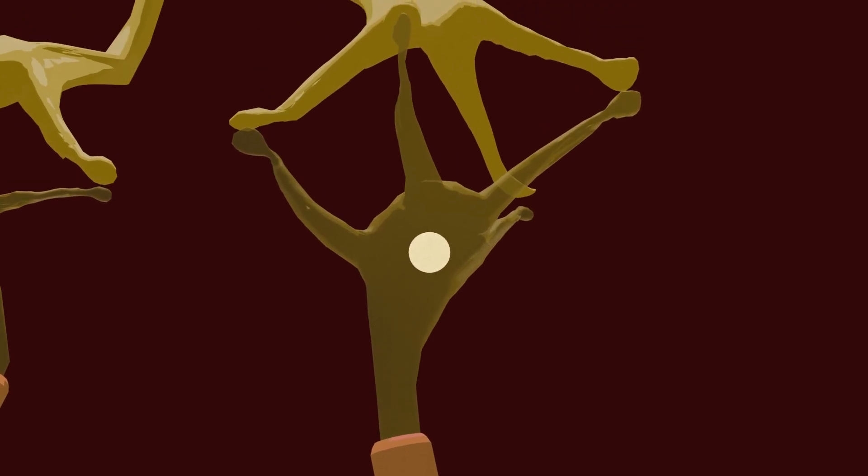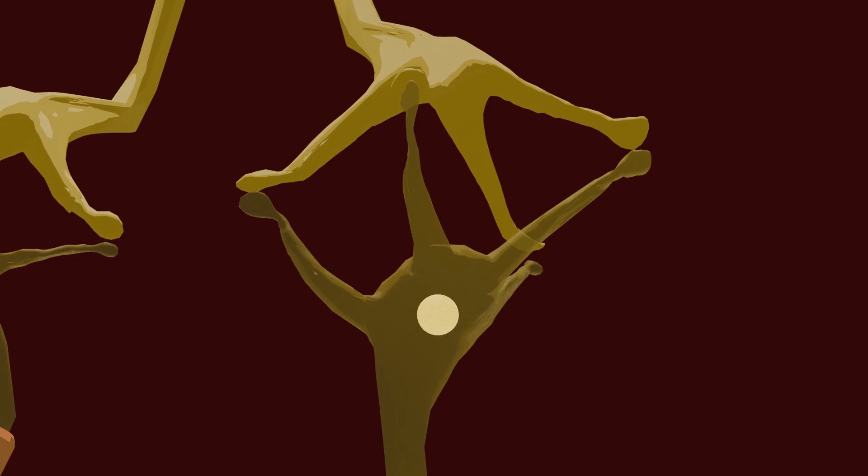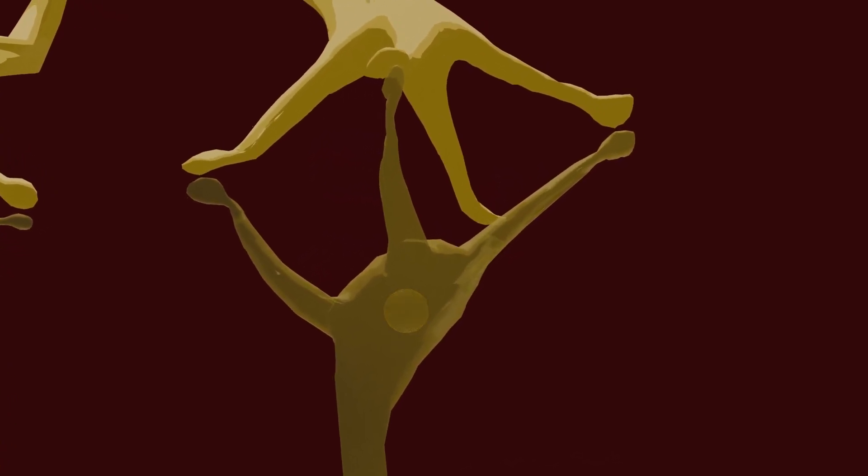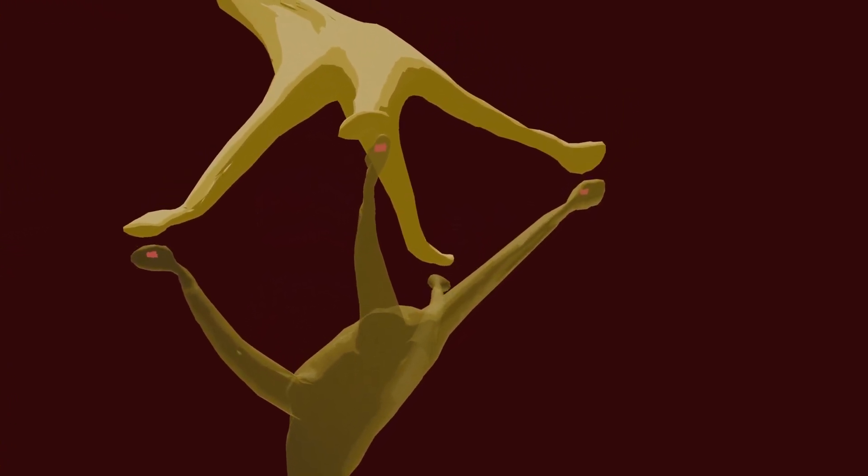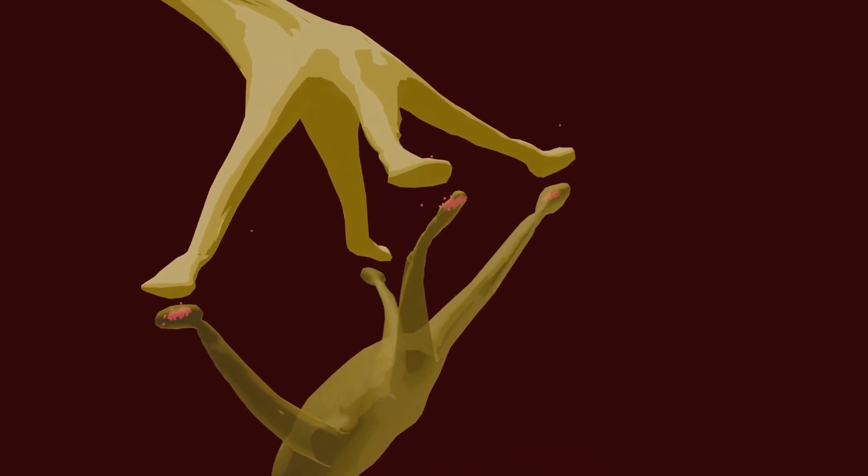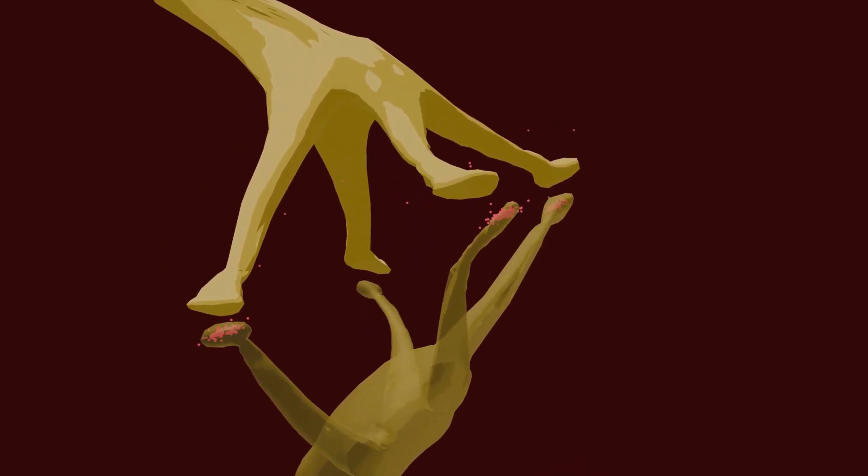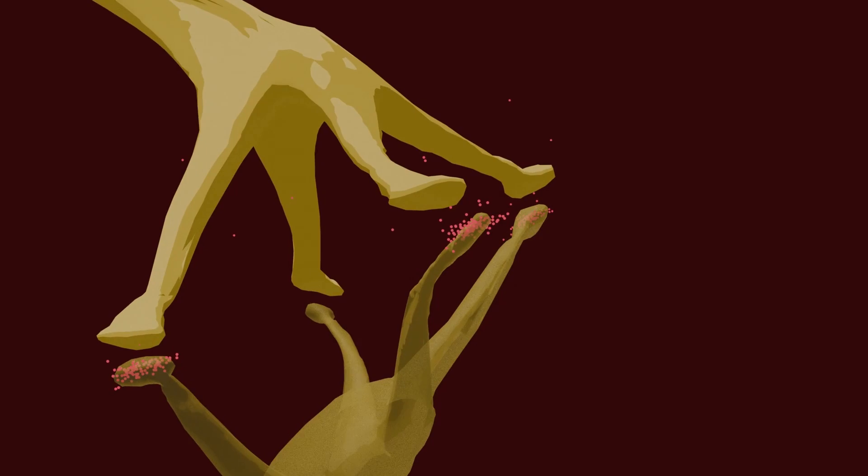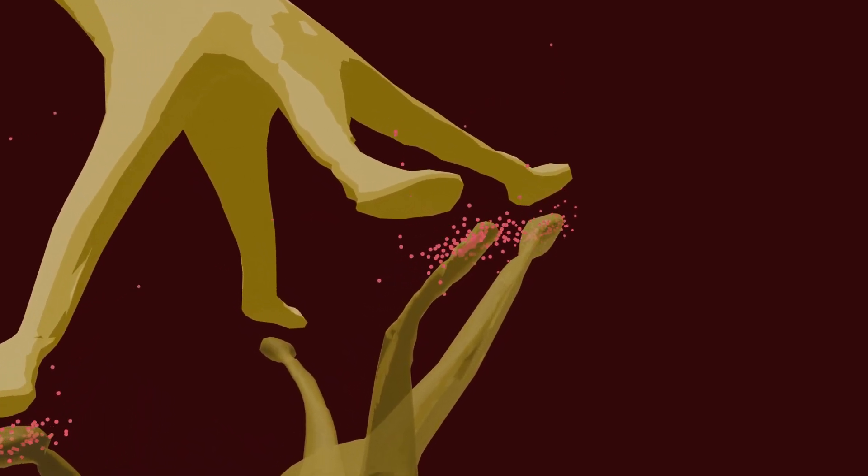Here we see the synapses with the second order neurons. The first neuron releases neurotransmitters that is picked up by the second order neuron.